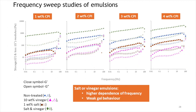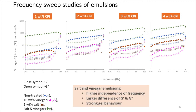In the frequency sweep studies, G' remained higher than G'' at lower frequencies for all emulsions. However, at higher frequencies above 10 Hz, most emulsions showed a drop in G' and an increase in G'', leading to a crossover and gel breakdown. For salt- or vinegar-only emulsions, the modulus showed higher frequency dependence, indicating weak gel structure. For both salt and vinegar-added emulsions, G' showed more independence of frequency and a larger difference between G' and G'', indicating reduced inter-droplet motion at shorter time scales and a stronger gel-like behavior.